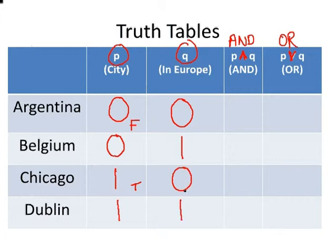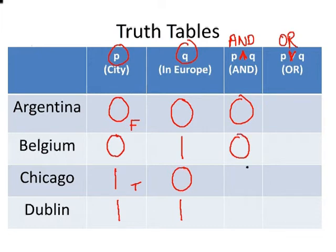Now we're going to look at the AND condition. The place has to be a city and has to be in Europe — essentially a European city. Argentina is a South American country, not a European city — zero. Belgium is in Europe but it's not a city — zero. Chicago is a city but not in Europe — zero. And Dublin is a European city — give that a one.